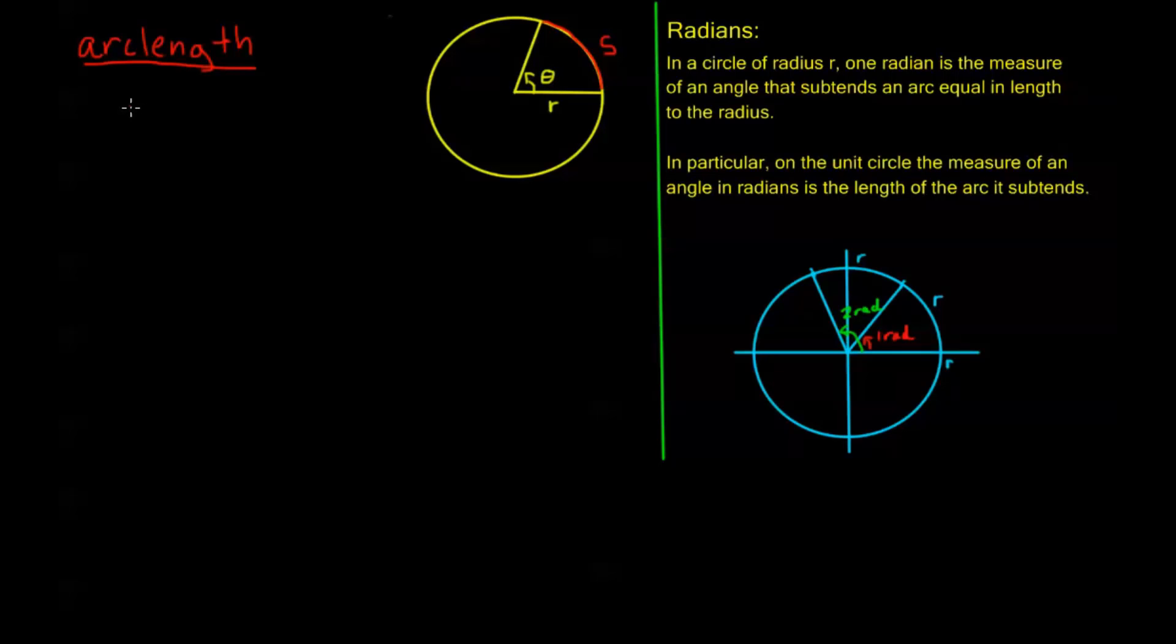of length theta times r, right? Just like we have over here, one radian is an arc of one r, two radians is an arc of two r's, well, if I had three halves radians, well, that would be an arc length of three halves times the radius r. And that's going to be true for any interior angle theta.